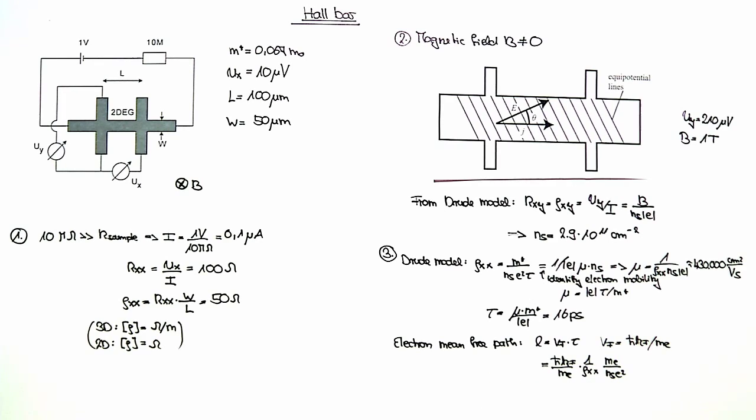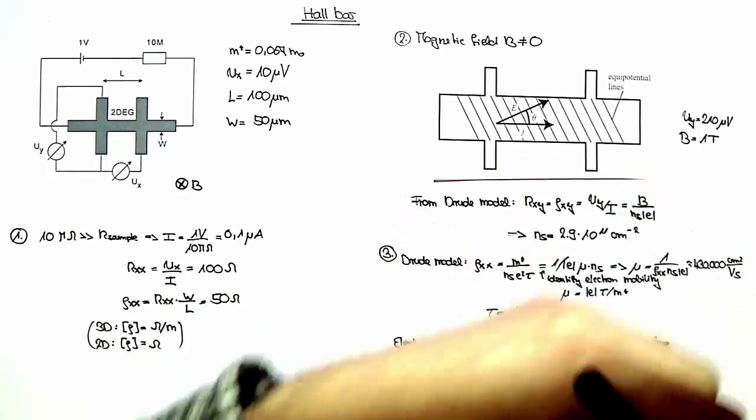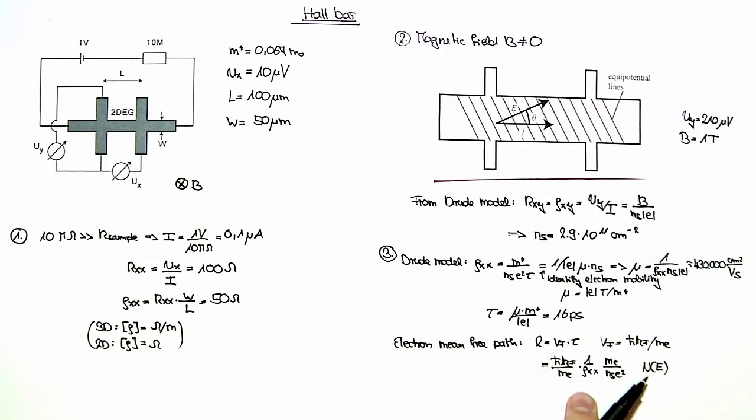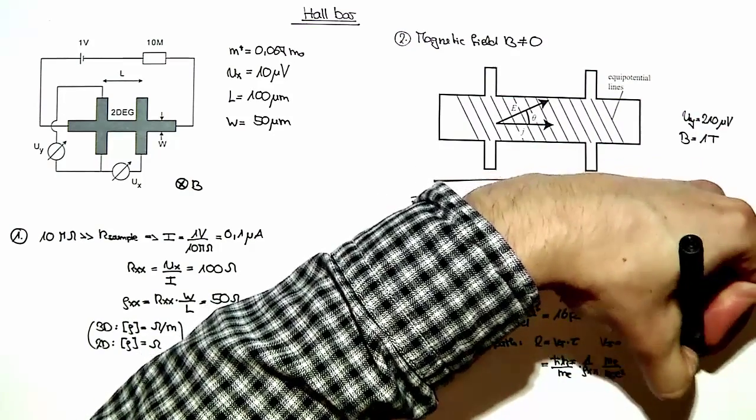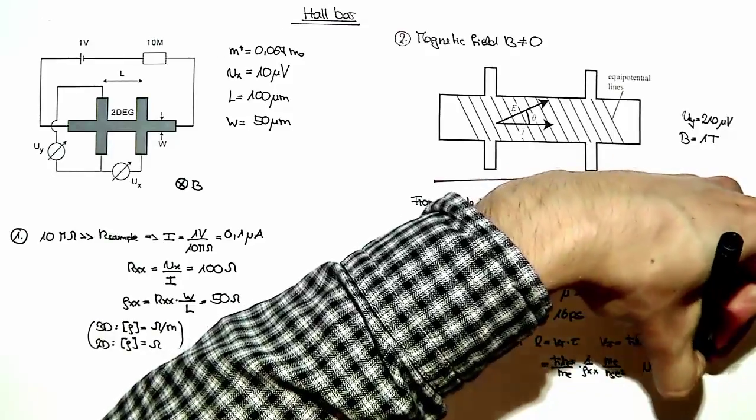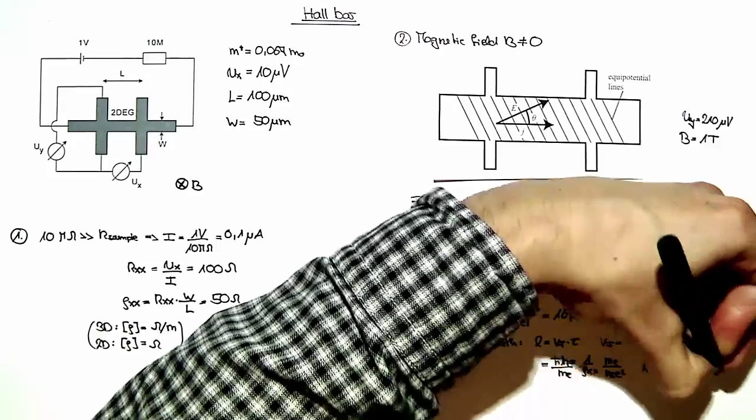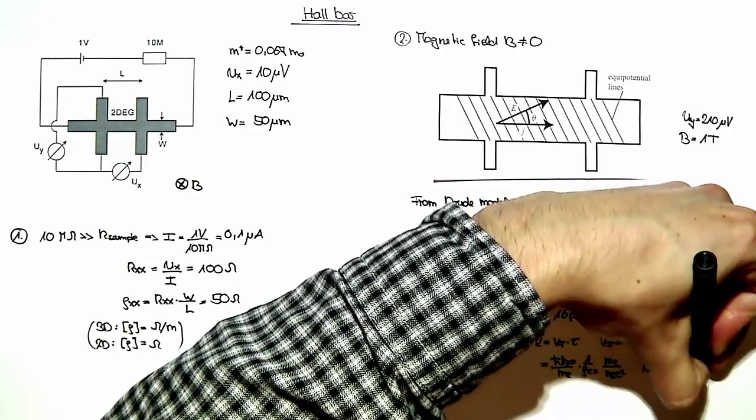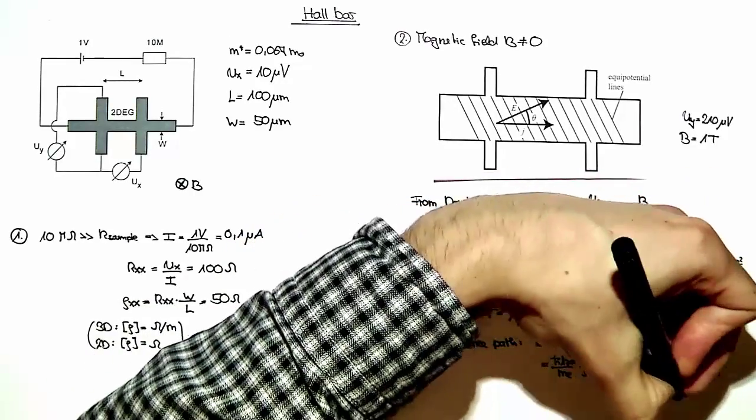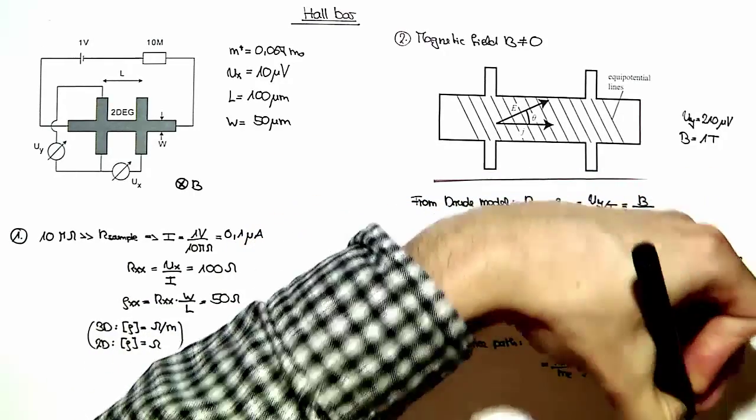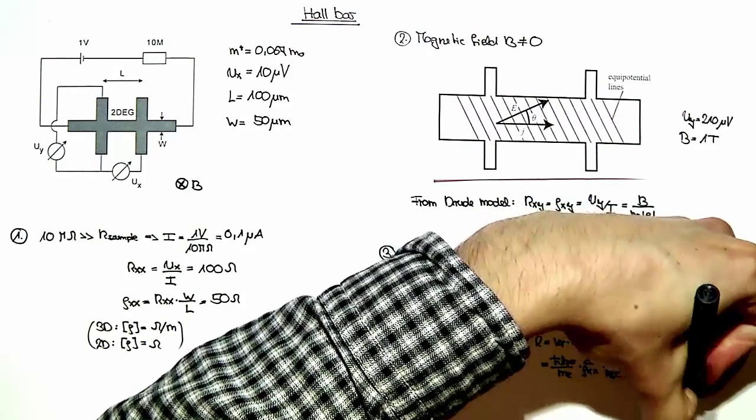For this we use the fact that the number of electrons below energy E being occupied for an isotropic system is equal to pi times k of E times 2 over 2 pi. So the electron density Ns is given as kf squared over 2 pi.